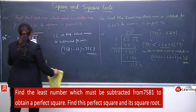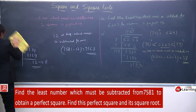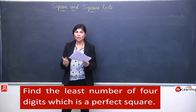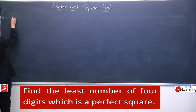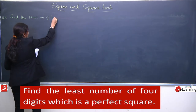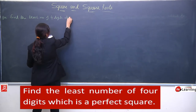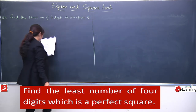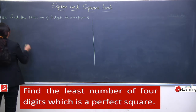Ab hum jo question lenge: least number of four digits - means ab hume number nahi diya, aur hume pata karna hai ki hume kya karna hai. Find the least number of four digits which is a perfect square. Also find the square root of that number.